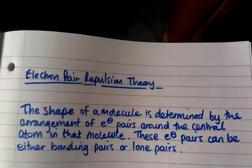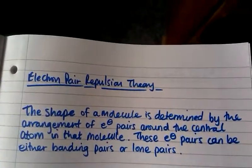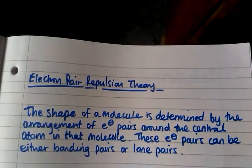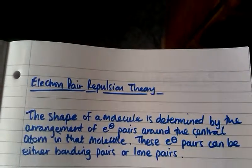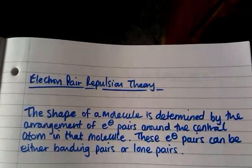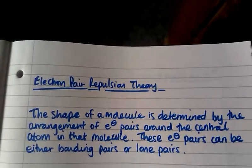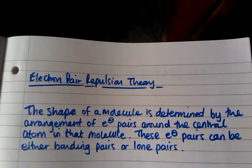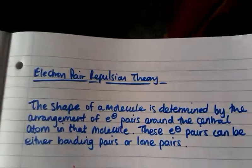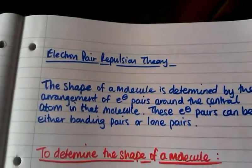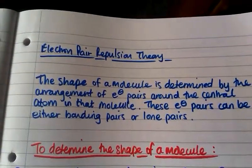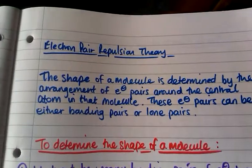Electron pair repulsion theory tells us that the shape of a molecule is determined by the arrangement of electron pairs around the central atom in that molecule, and that these electron pairs can be either bonding pairs or lone pairs. To determine the shape of a molecule there are a few things that we need to do.